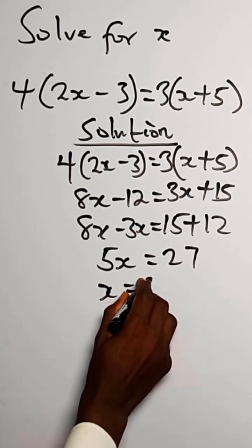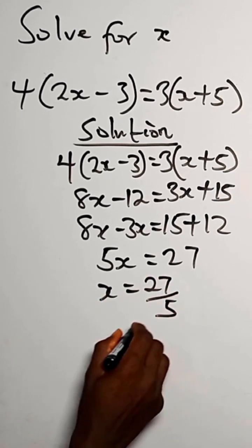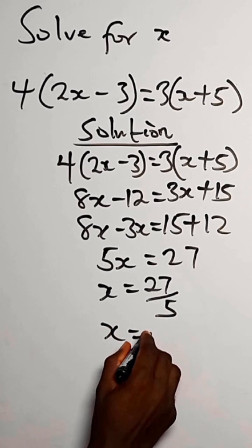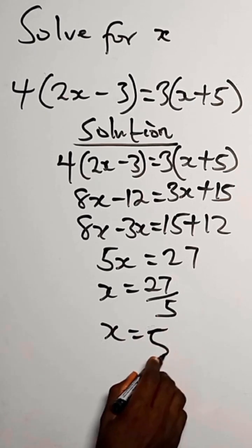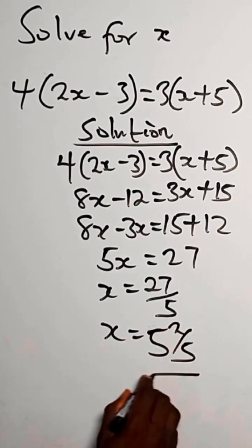So the value of x equals 27 divided by 5. Or we say x equals... okay, sorry. x equals 27 over 5.